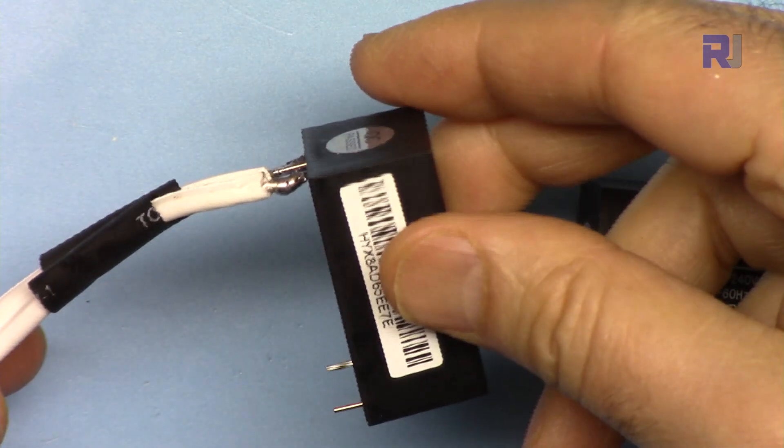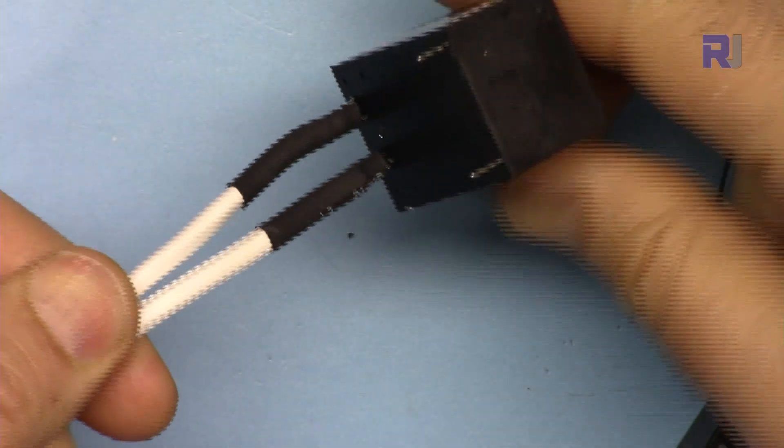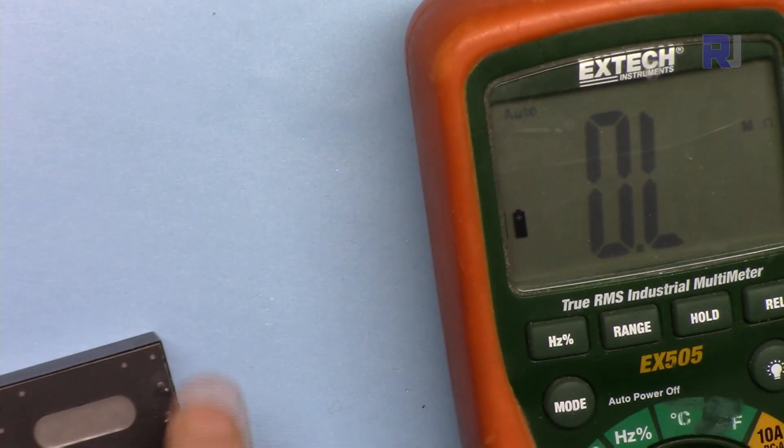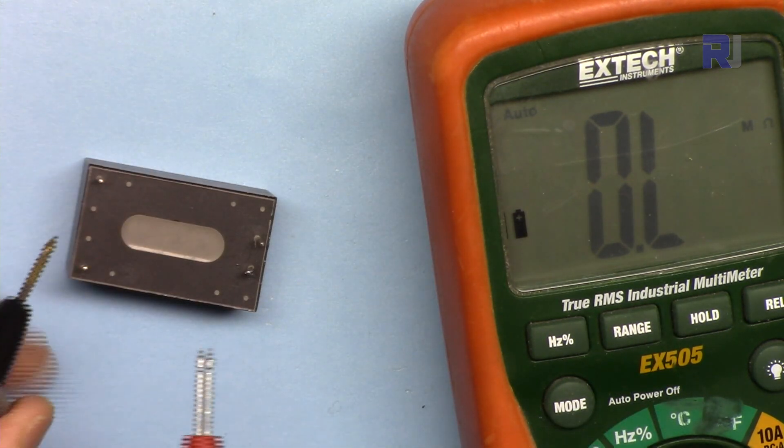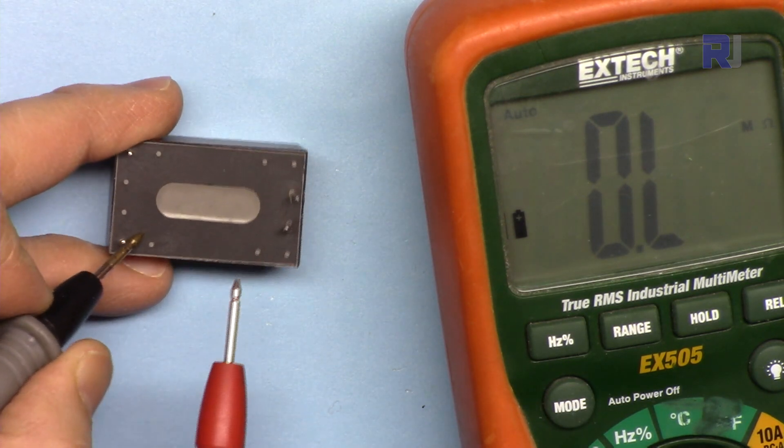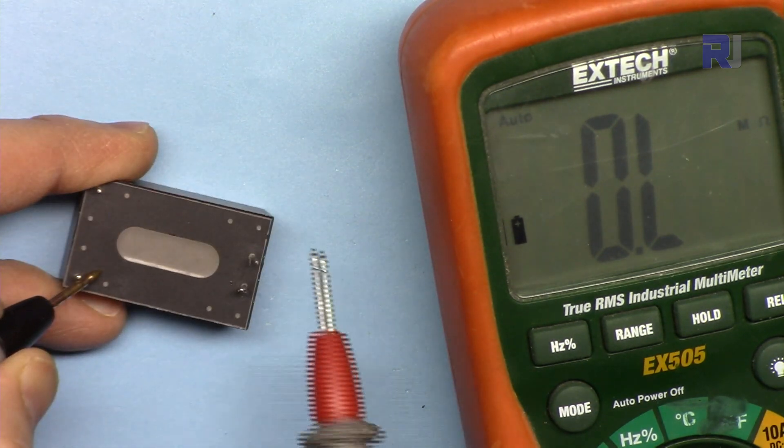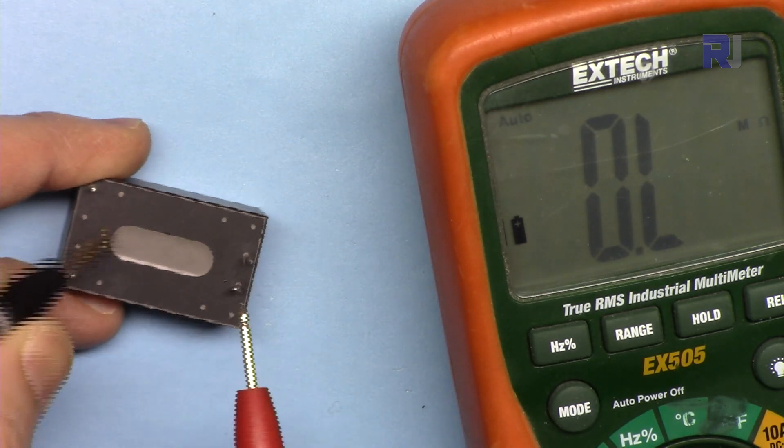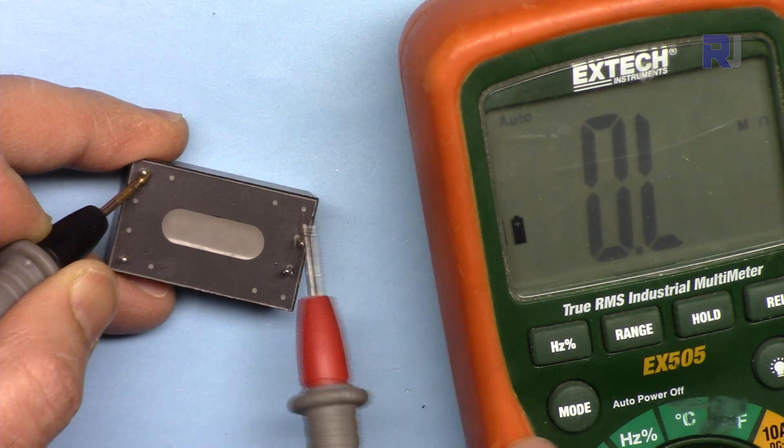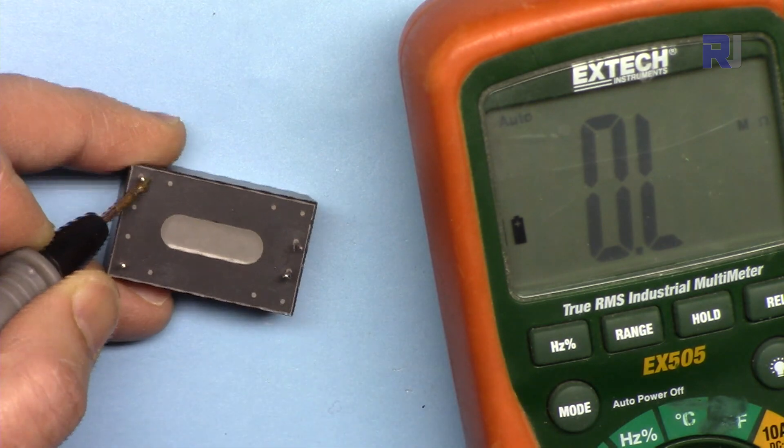I've soldered the AC wires to this and put heat shrink so accidentally I do not touch AC. Now let's check the resistance between input and output of this module. I'm going to connect to one of the wires and come here, infinity, and then here open loop. They're completely isolated.